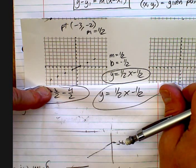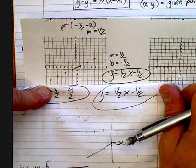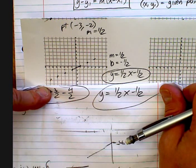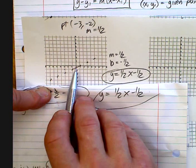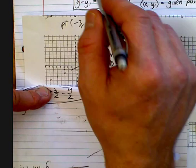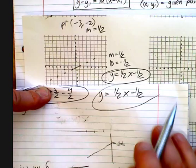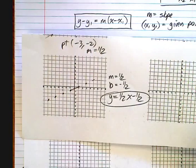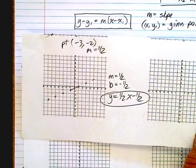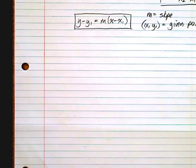So why not use the graph, you ask? You can if you want — I'm not saying don't use the graph. But there are going to be situations where it's not that easy because you won't be able to find the y-intercept. So you're going to need to use this formula.